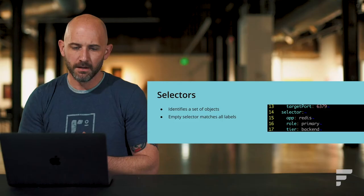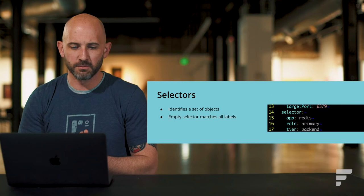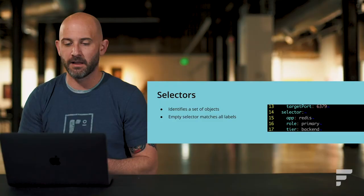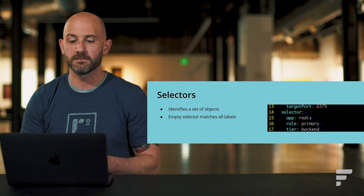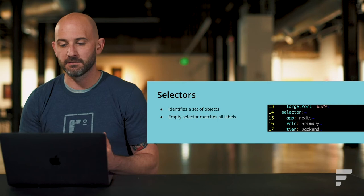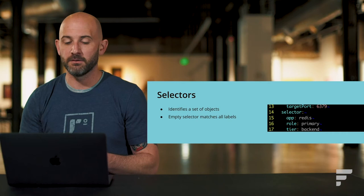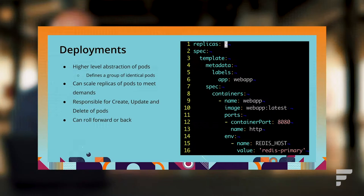On the other side of labels are selectors. Selectors give you the ability to say that one Kubernetes object interrelates with another you previously applied labels to. Selectors identify and filter a set of objects by their labels — importantly, an empty label selector will match all labels. For example, a selector with app: redis will find everything labeled with that key-value pair. Removing the value would match everything that has the 'app' key with any value.